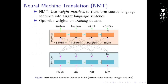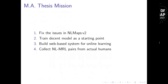All of this is powered by lots of weight matrices optimized by gradient descent on training data. My mission in my master's thesis was to fix the issues in NLMaps version 2, then train a decent model as a starting point, build a web-based system for online learning, and also collect a new dataset of natural language and MRL pairs from actual humans — because the existing one was generated by templates.